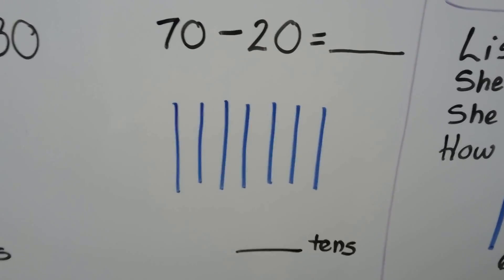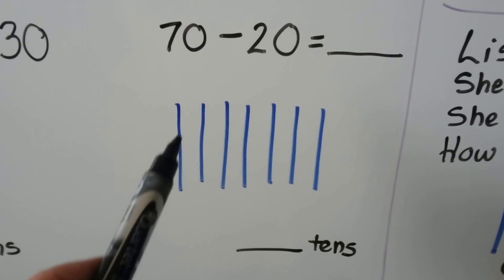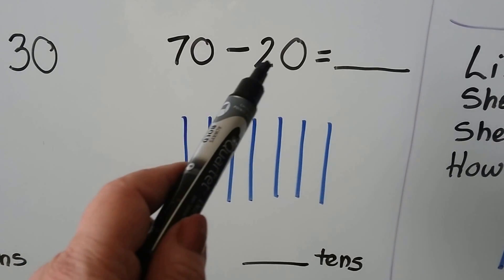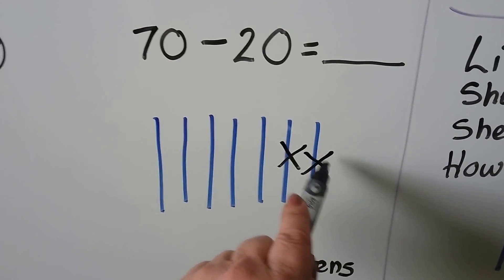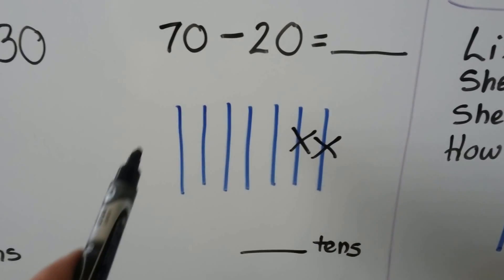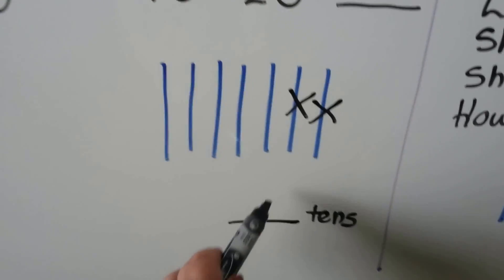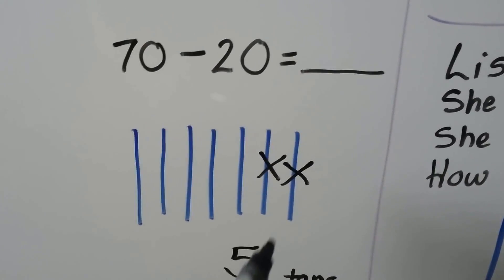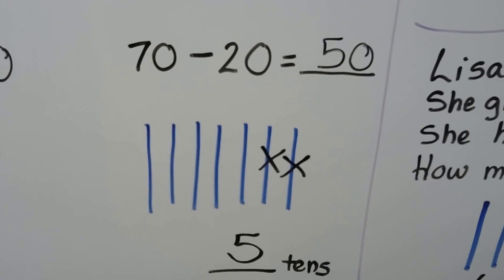Let's try it again. We have seventy minus twenty. We can make seven blue lines for seven tens: ten, twenty, thirty, forty, fifty, sixty, seventy. We can take away two of the tens: one, two — that's ten, twenty. We can count how many tens are left: one, two, three, four, five tens are left over. Five tens are equal to fifty. Seventy minus twenty is equal to fifty.